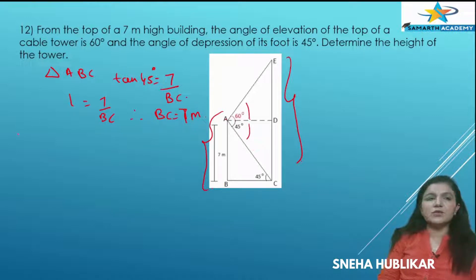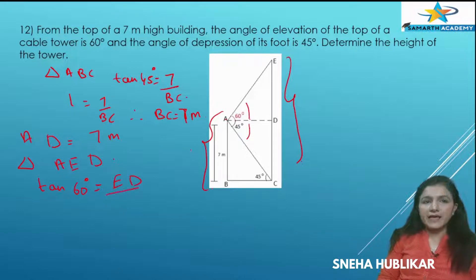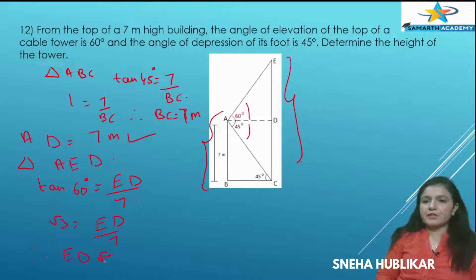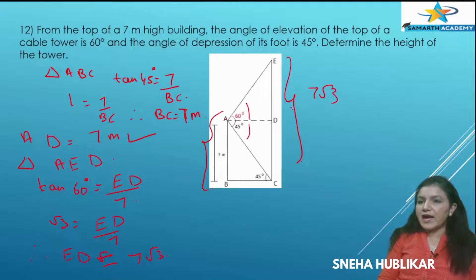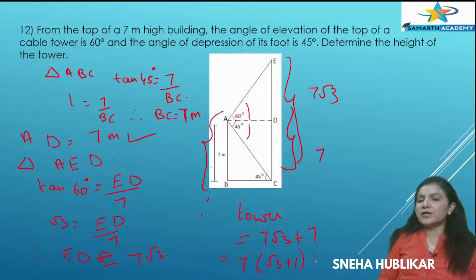From the diagram, AD and BC are equal, so AD is also 7 meters. Now consider triangle AED: tan 60° equals ED by AD equals ED by 7. So root 3 equals ED by 7, therefore ED equals 7 root 3. The height of the tower equals ED plus CD, which is 7 root 3 plus 7, giving 7(root 3 plus 1) meters.